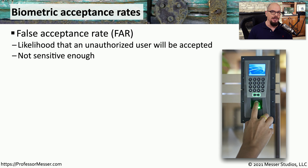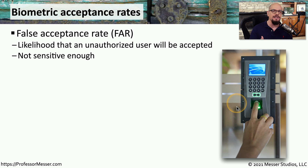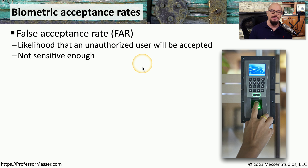Using biometrics as an authentication factor is an uncertain science. There are differences in users and differences in the sensitivity of the readers, so we have to spend time making sure that the sensitivity levels are providing the correct access for our users. One of the metrics you would examine to determine how well your biometrics are working is the false acceptance rate, or FAR. This is how often your biometric system will approve an unauthorized user. It's common to increase the sensitivity of the biometric reader to decrease the false acceptance rate.